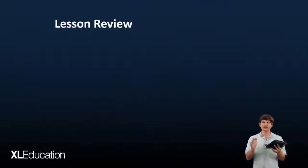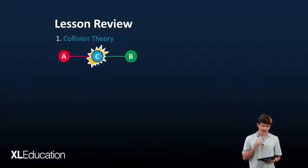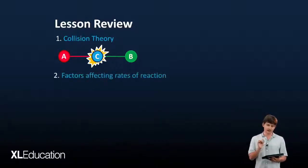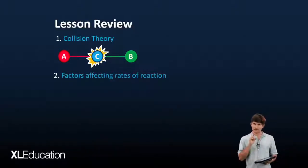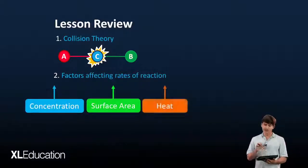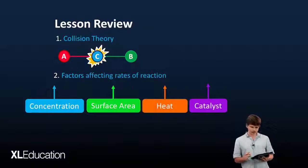Let's quickly round off what we did in this lesson today. The first is collision theory. We have A crashing into B to make C. And then finally, we have factors affecting the rates of reaction. Remember the first one is concentration. The second one, surface area. The third one, heat. And the final one, catalysts. Isn't that cool? I'm so glad you guys could join me for this little bit of a lesson on rates of reaction. Good luck for the rest of it, guys.